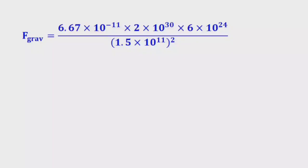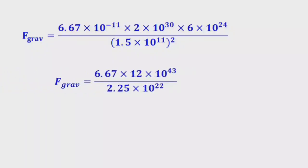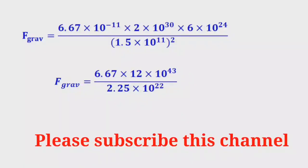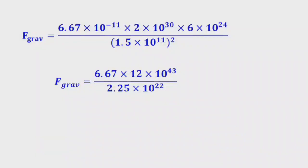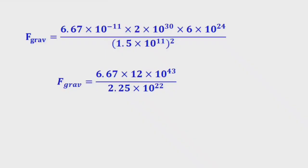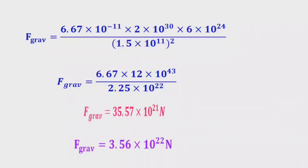6.67 into 2 into 6 equals 12. We already have 10 power 43. 1.5 squared equals 2.25, and 10 power 11 squared equals 10 power 22. So 12 divided by 2.25 equals 35.57, and 10 power 43 divided by 10 power 22 equals 10 power 21 Newtons. Therefore 35.57 into 10 power 21 Newtons can be written as approximately 3.56 into 10 power 22 Newtons.